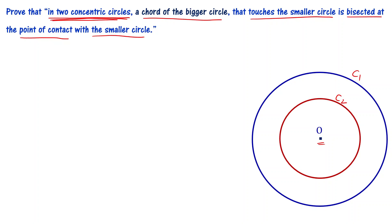We have two concentric circles and a chord of the bigger circle. First of all, a chord is when you take two points on a circle and connect them to draw a straight line.